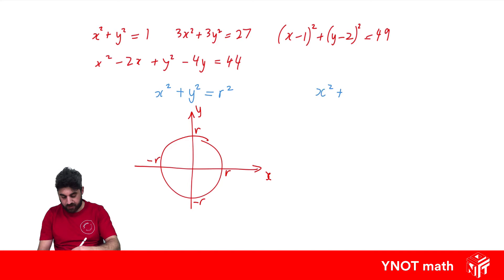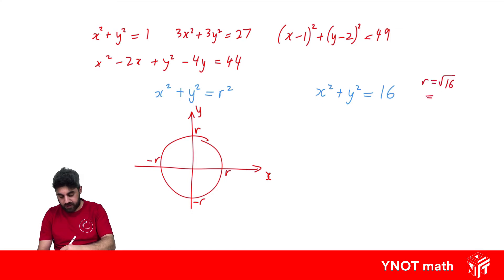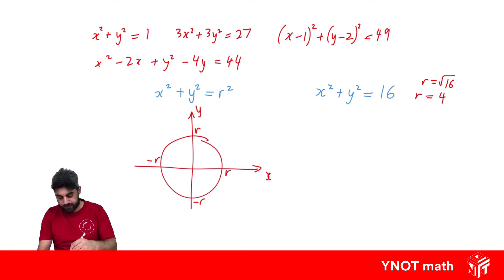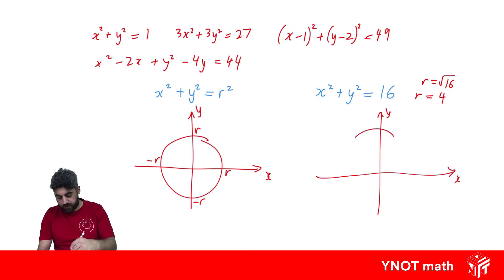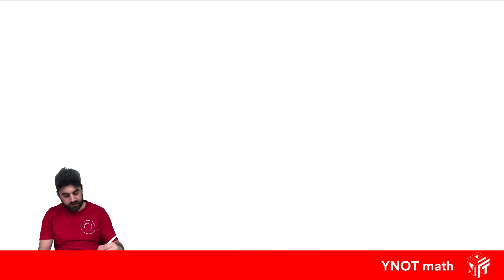If we have something like x squared plus y squared equals 16, this value is your r squared, so we just take the square root to find r. The square root of 16 is 4, so the radius of the circle is 4 and it's centered at the origin. When we draw it out, it passes through 4, 4, minus 4, and minus 4.